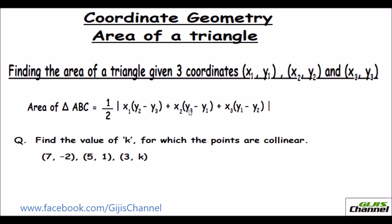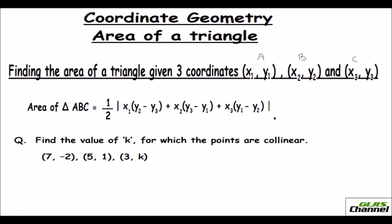When the three coordinates are given, how do you find the area of a triangle? Finding the area of a triangle given three coordinates (x1, y1), (x2, y2), and (x3, y3) — I just take the points as A, B, and C. The area of triangle ABC equals half the absolute value of x1(y2 - y3) + x2(y3 - y1) + x3(y1 - y2). We take the absolute value because area cannot be negative — even if you get a negative result, the absolute value makes it positive.